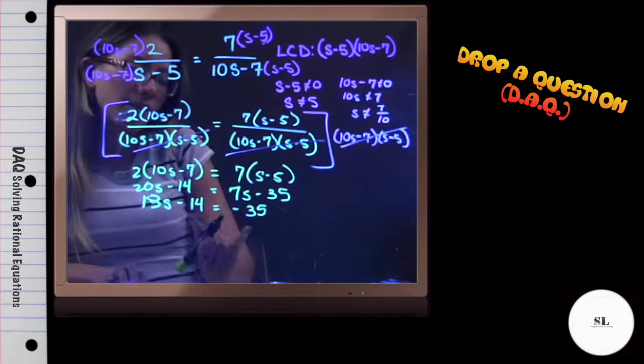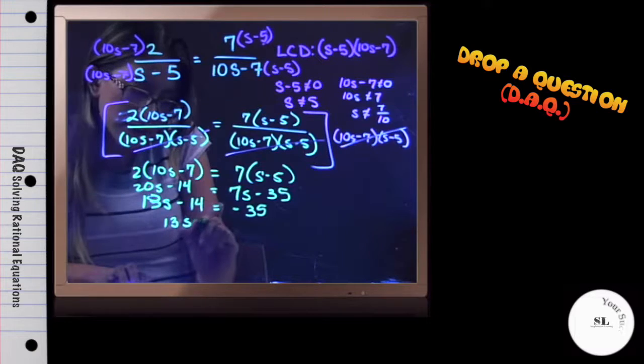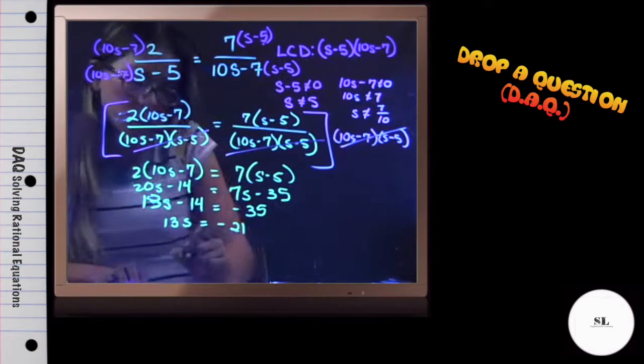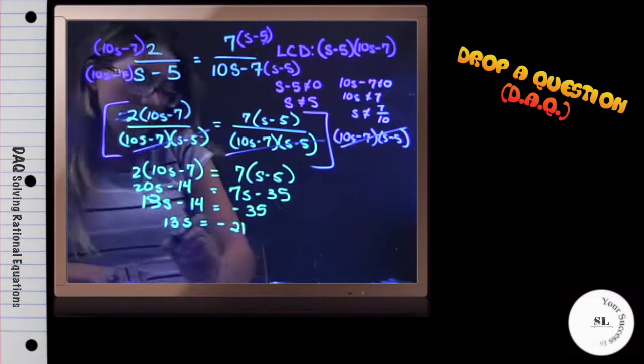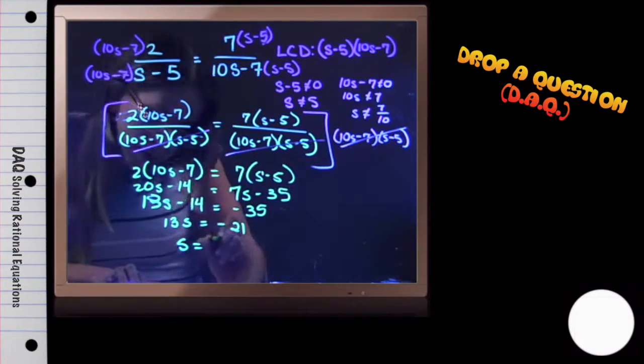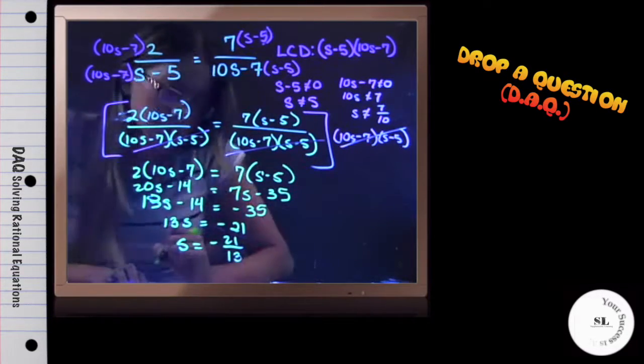And now I have to add 14 to both sides, which will leave me with 13s equaling negative 21. And then divide 13 both sides, where s is now equal to negative 21 over 13.